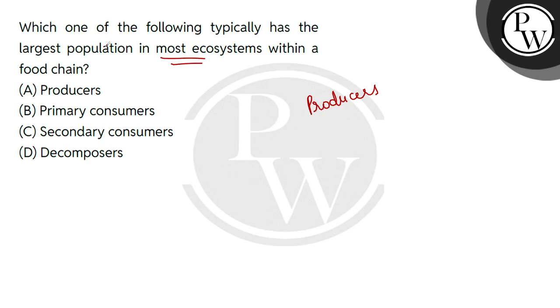So what will be the correct answer? The producer will be option number A. The primary consumer is wrong, the secondary consumer is wrong, and the decomposers are also wrong. The correct answer will be option number A.